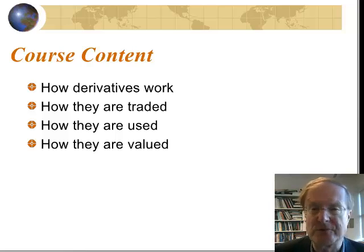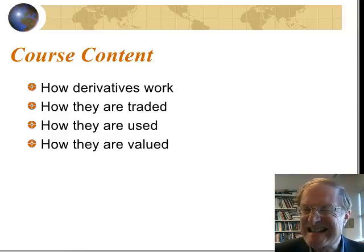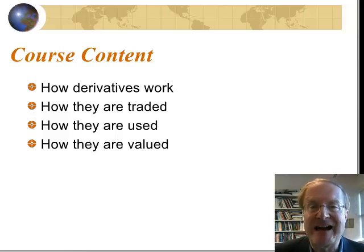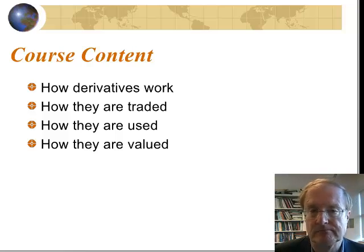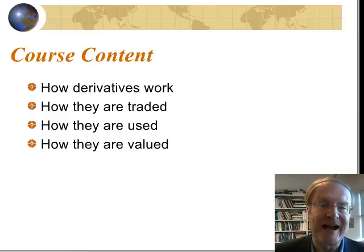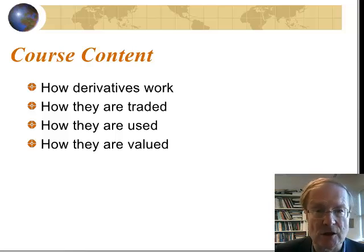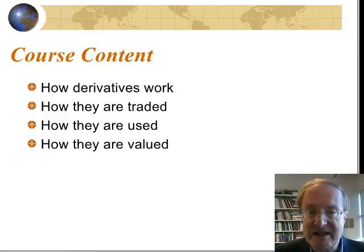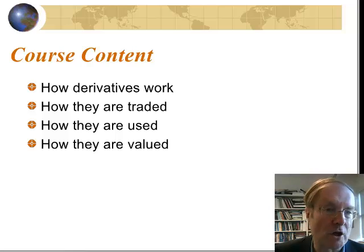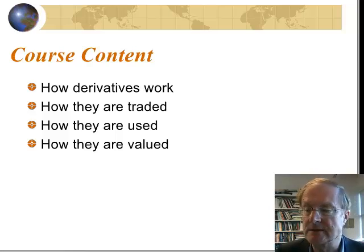We'll also be talking about how derivatives are valued. As its name implies, a derivative contract is something whose value derives from the value of something else. Take a stock option for example — the value of a stock option derives from the price of the underlying stock. On this course we'll be talking about what determines the relationship between the value of a stock option and the value of the underlying stock.